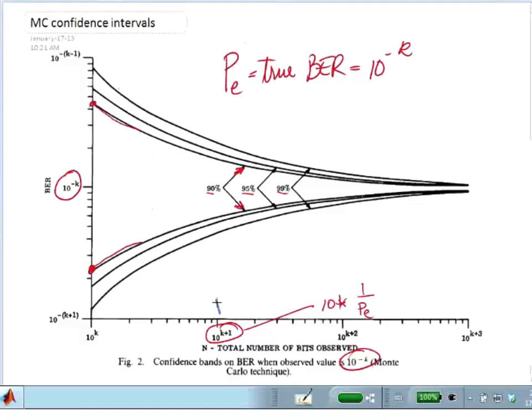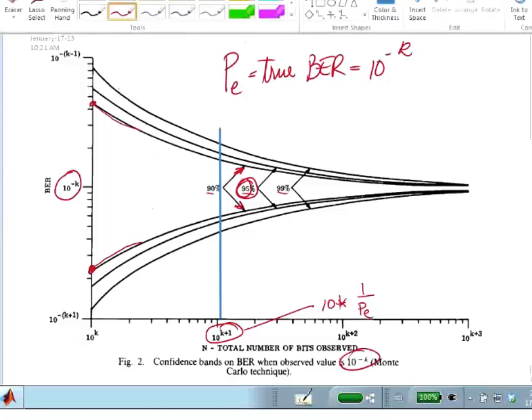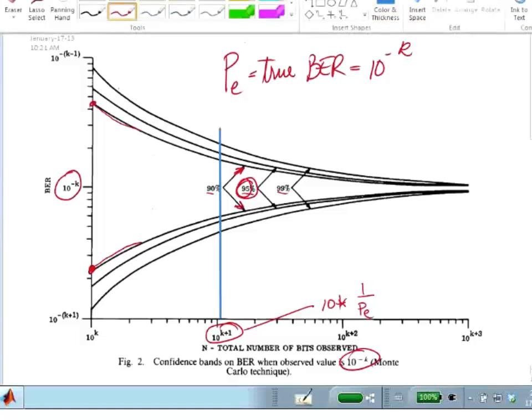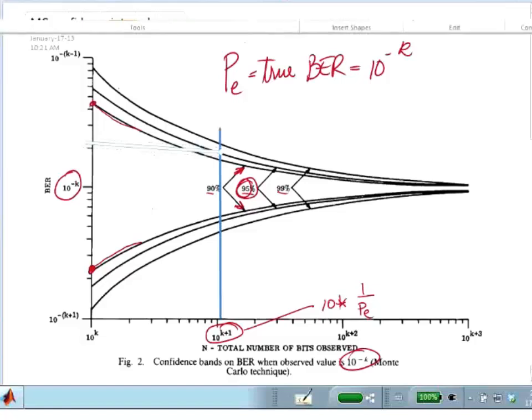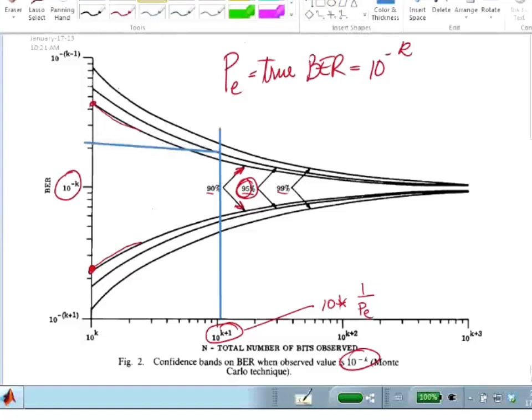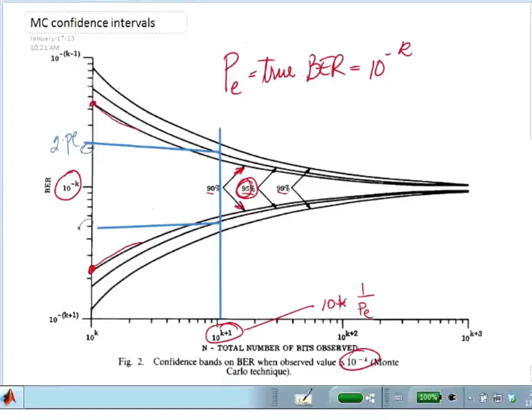And if I put a line here, more or less, and then I looked at where this intersected, I'd say the ninety-five percent curves. And I don't draw very straight lines, but trust me, this is happening at about two times P-E, at this point there, and about point five times P-E.